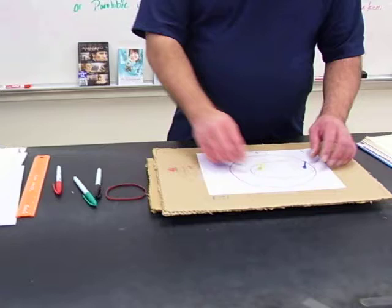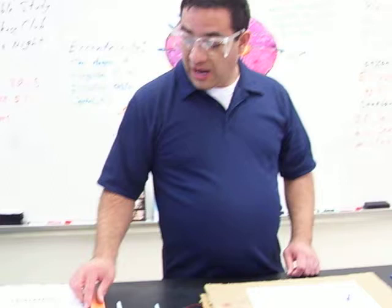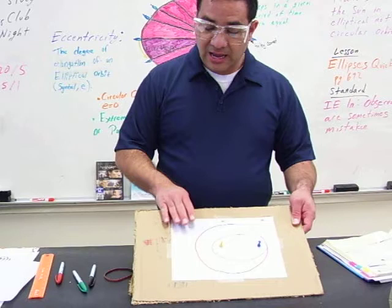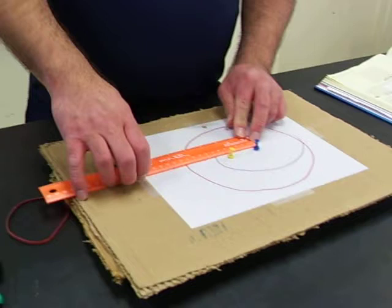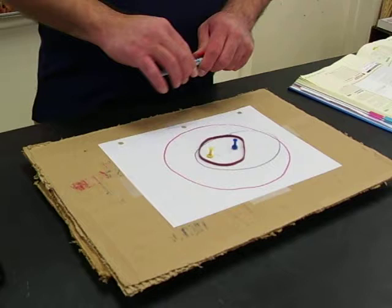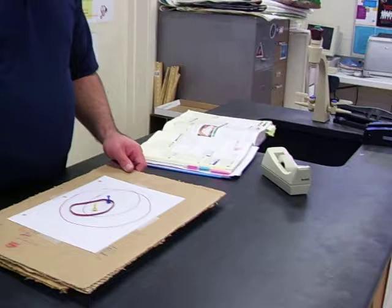To demonstrate this, you take two thumbtacks, a rubber band, safety goggles, a ruler, paper, cardboard, and tape. It's best if you tape down the paper, then put your two thumbtacks five centimeters apart. Then you put in your rubber band, take your vis-a-vis marker, and trace around it to create this circular orbit.